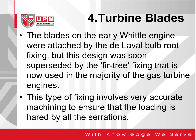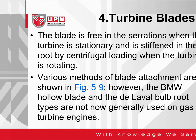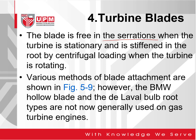The blades on the early Whittle engine were attached by the De Laval barb root fixing, but this design was soon superseded by the fir tree fixing that is now used in the majority of gas turbine engines. This type of fixing involves very accurate blade machining to ensure that the loading is shared by all the serrations. The blade is also free in the serrations when the turbine is stationary and is stiffened in the root by centrifugal loading when the turbine is rotating. Various methods of blade attachment are shown in figure 59. However, the BMW hollow blade and the De Laval bug root types are not now generally used on gas turbine engines.